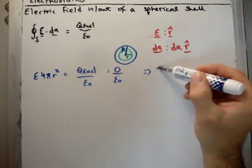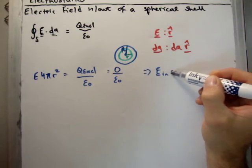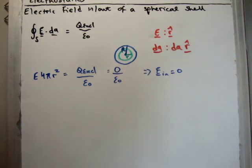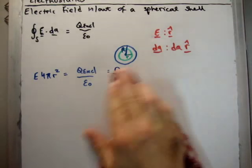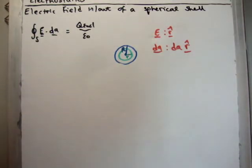So we're going to have zero over epsilon zero. Therefore, the electric field inside is equal to zero. So the electric field inside a spherical conducting shell is zero. And that actually is how Faraday cages work. So we'll talk a bit more about that at a later stage.